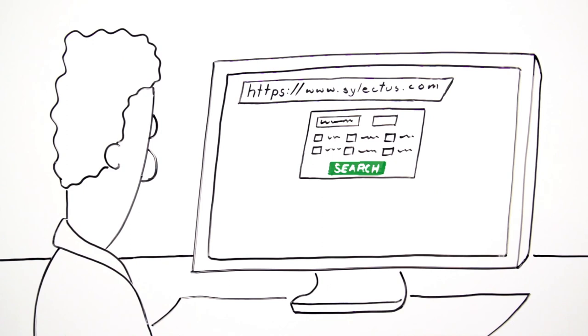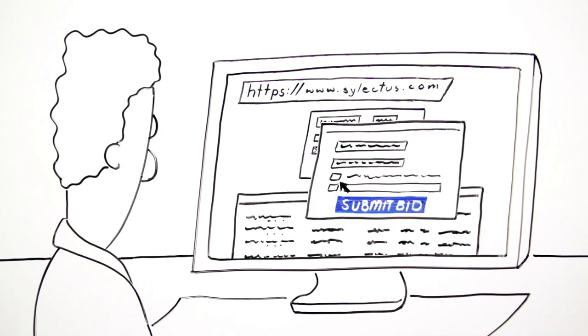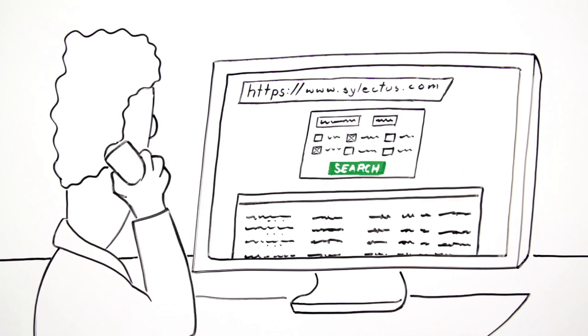Depending on his needs, Bob easily posts a load or searches for one on the Selectus board. He sends a brief email through the automated system, negotiates a rate,